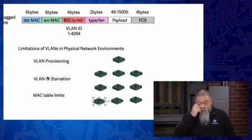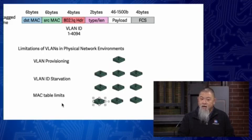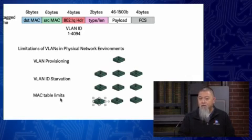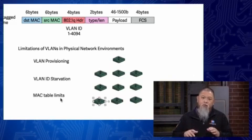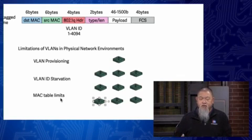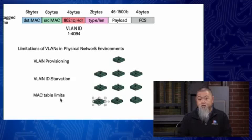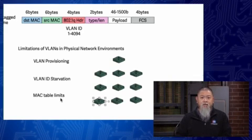The third limitation, which you might not think about unless you've been in a production network, is the MAC address table limitation on switches. A switch performs three primary functions, all based on how information is put into the MAC address table. It only inserts the source MAC address into the table, attaching it to the port number. When a device communicates into a switch, the source MAC address gets added to the table linked to that port.